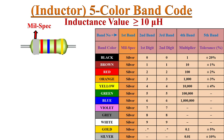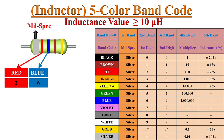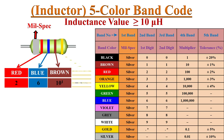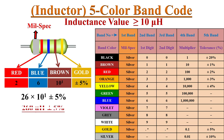Here the first color band is the military specification band. The next digits: red is 2, blue is 6, the multiplier is brown — 10 to the power of 1 — and the tolerance band is gold, giving plus or minus 5% tolerance. Therefore the value of inductance is 260 micro-Henrys with plus or minus 5% tolerance.